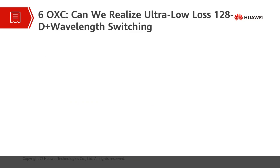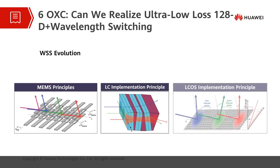Currently, the key technology of WSS lies in the optical switch solution. There are three mainstream WSS optical switch solutions: MEMS, LC, and LCOS. The MEMS consists of a micromirror array, and each light wave corresponds to one micromirror. When different voltages are applied to the micromirror, it deflects by different angles, and incident light is reflected to different angles to implement light exchange. The LC consists of a liquid crystal array and a crystal wedge; the liquid crystal array controls the polarization direction of the light waves, and the wedge deflects light beams to different directions, thereby implementing the optical exchange.